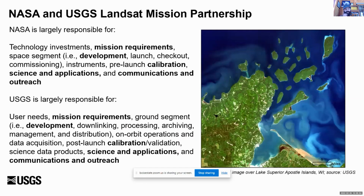In terms of the mission partnership, NASA is largely responsible for technology investments, mission requirements, and they developed the space segment — including development, launch, checkout, commissioning of instruments, prelaunch calibration, science and applications programs, and communications and outreach. USGS is largely responsible for user needs, mission requirements, and the ground segment. We develop the ground segment and operate downlink processing, archive, manage, and distribute the data. We conduct on-orbit operations and data acquisition, handle post-launch calibration, generate science data products, and also have our own science, applications, and outreach program.